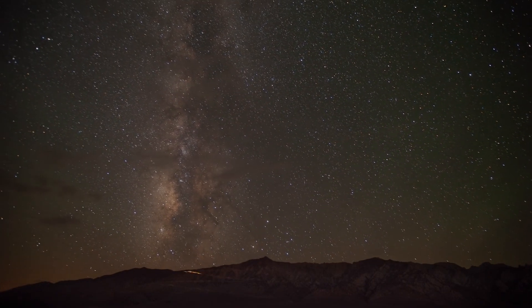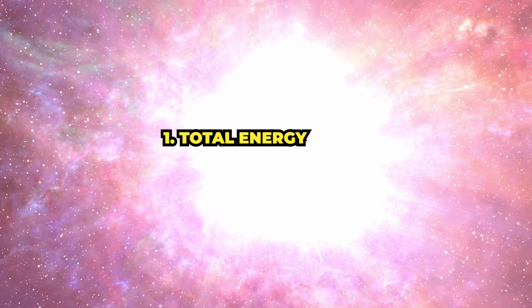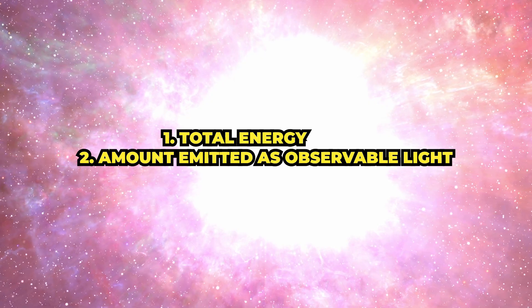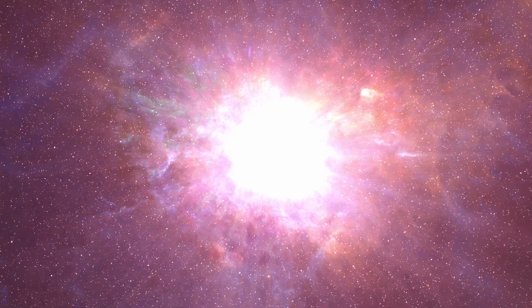There are two ways astronomers measure supernovae. One includes the total energy of the explosion, and the other is the amount of that energy that is emitted as observable light. Typically, the radiation of a supernova is less than 1% of the total energy.